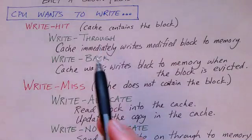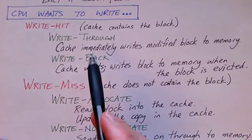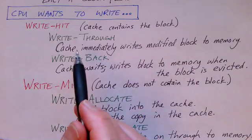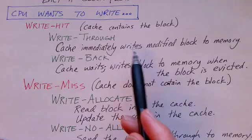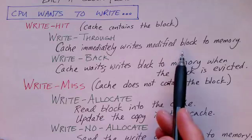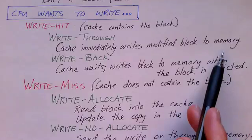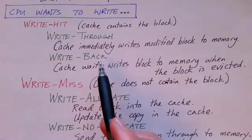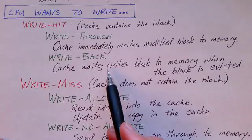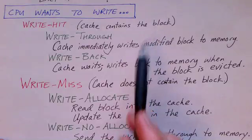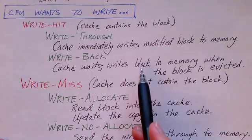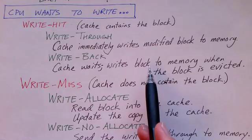With write through, the cache unit will immediately forward the update to main memory — it writes the modified block back to main memory right away without waiting. With write back, the cache updates the data stored in cache but does not copy it back to memory immediately. So the version of the block stored in memory will have the old data in it.